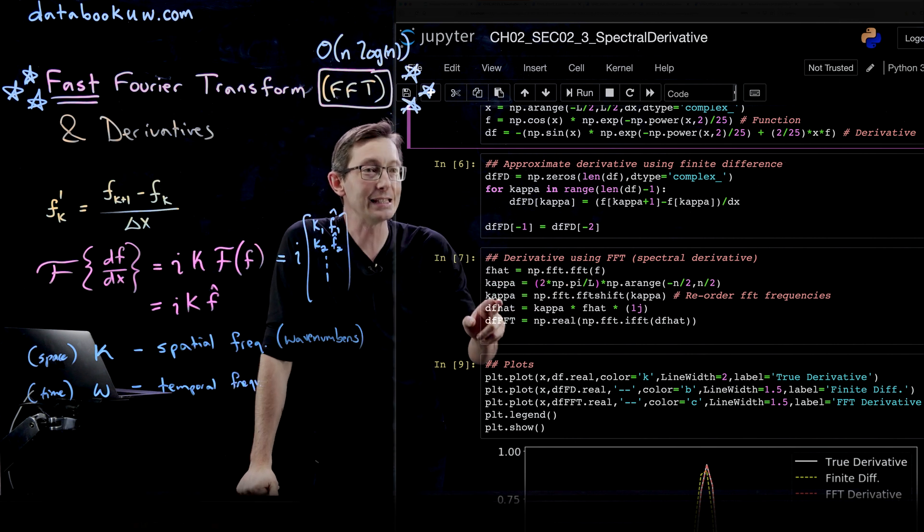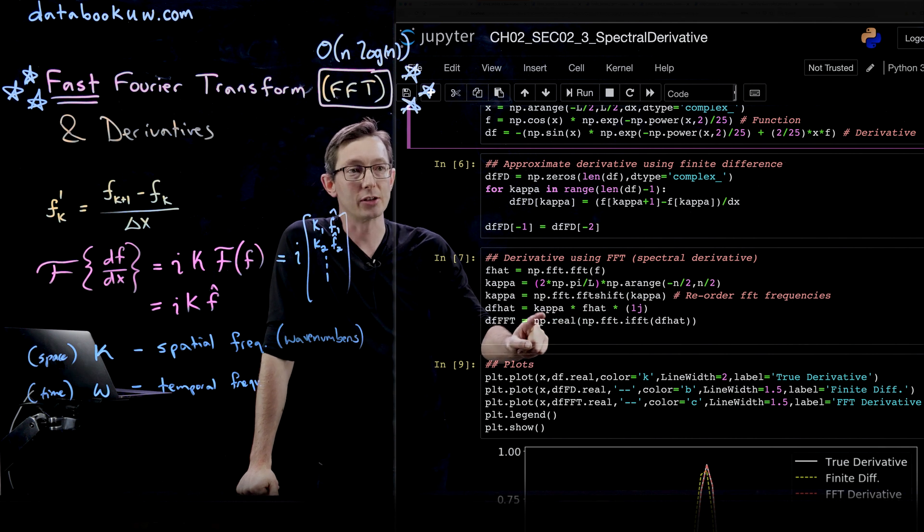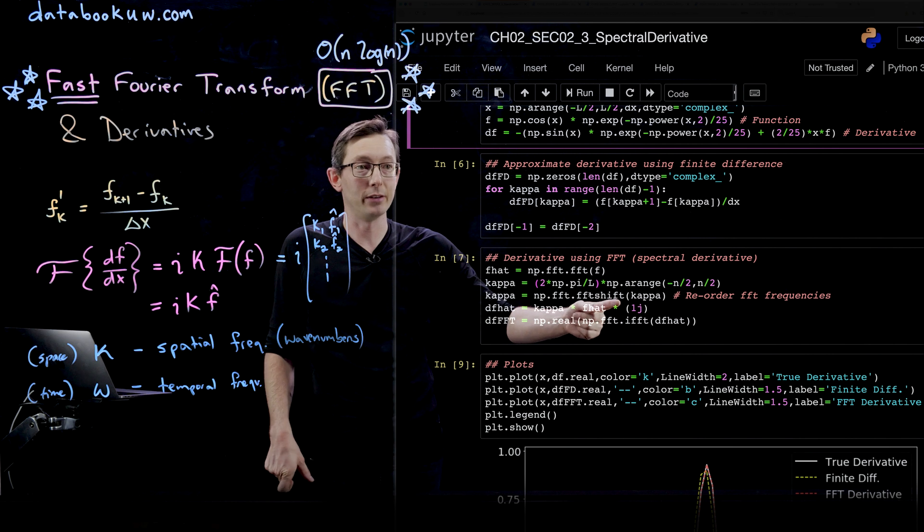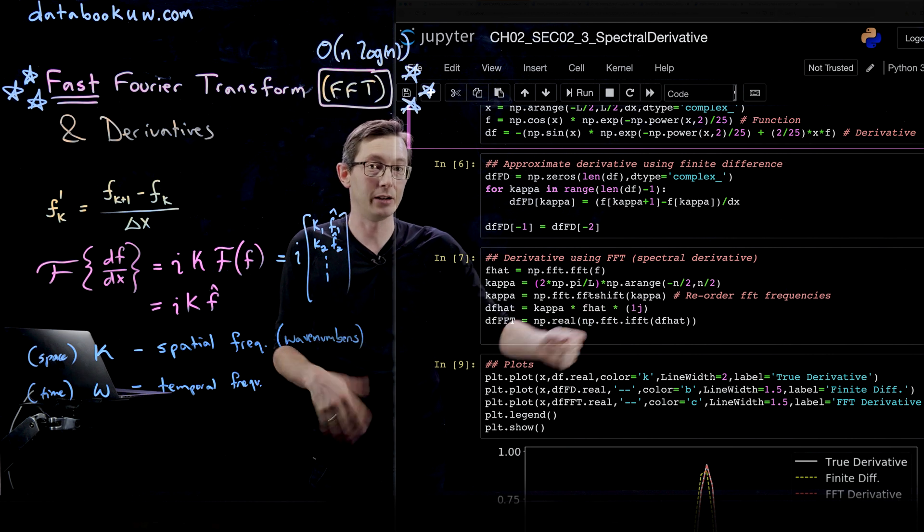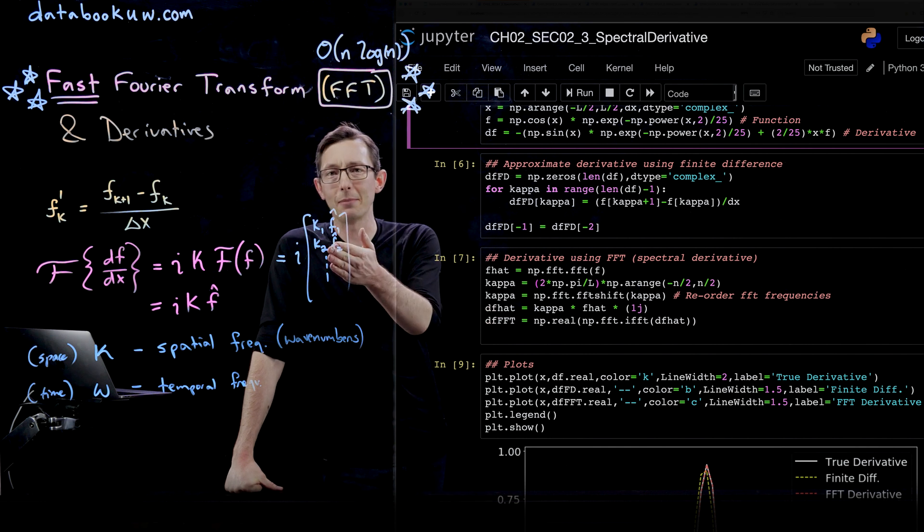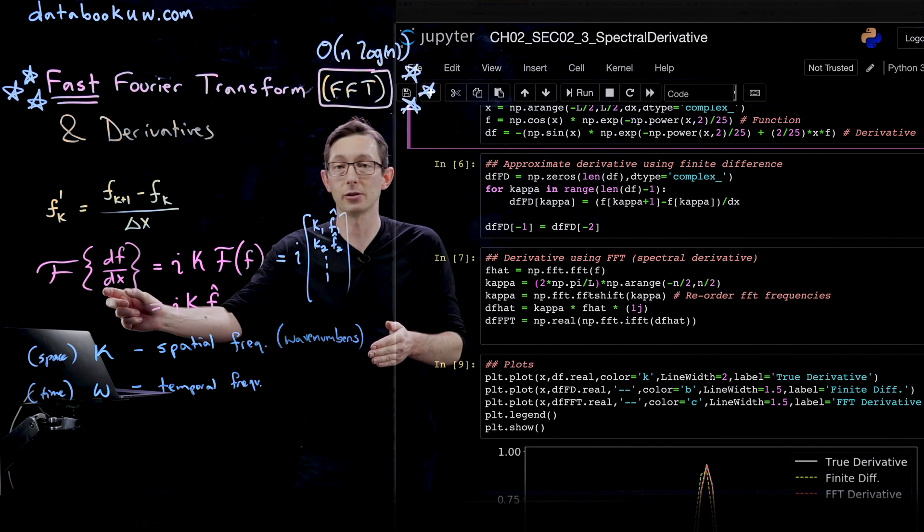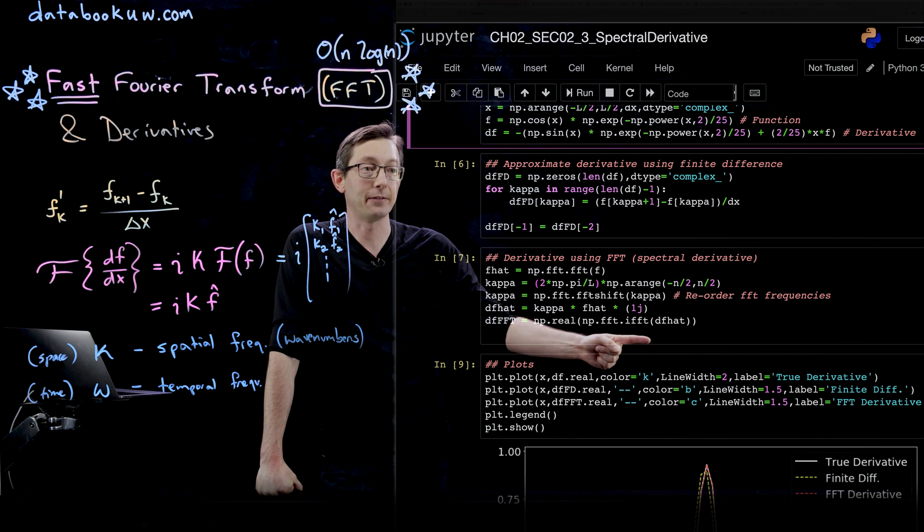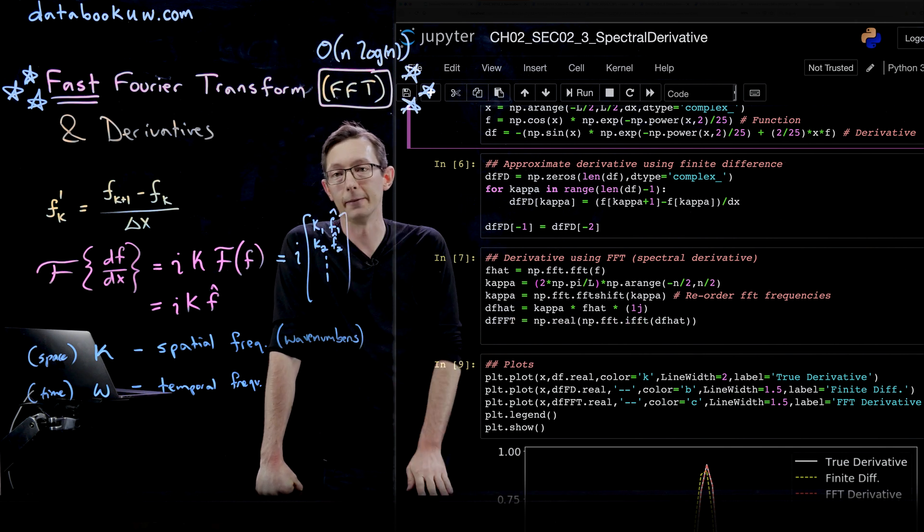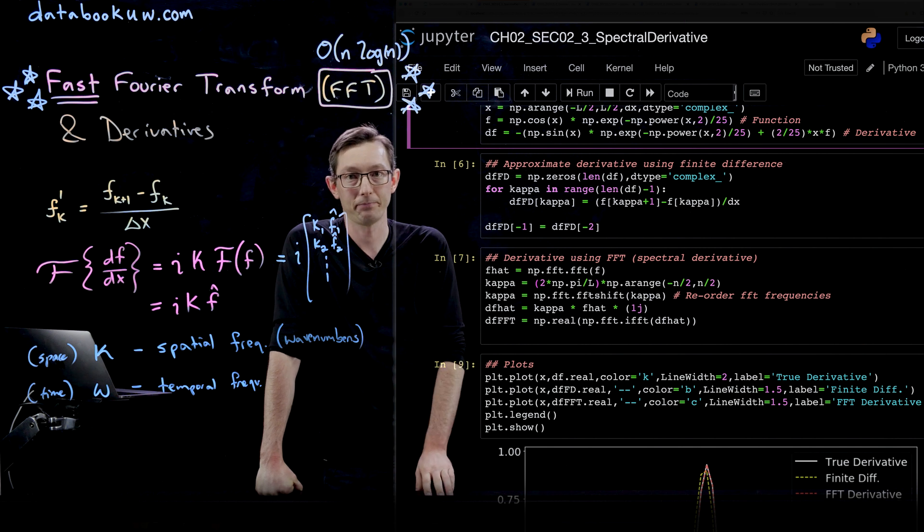Once you do that, it's really easy to compute the derivative. It's just kappa times f-hat times the square root of negative 1, this unit imaginary number, 1j. Then to get my derivative in real spatial units, I just take the ifft, the inverse fft of this derivative, i kappa f-hat.